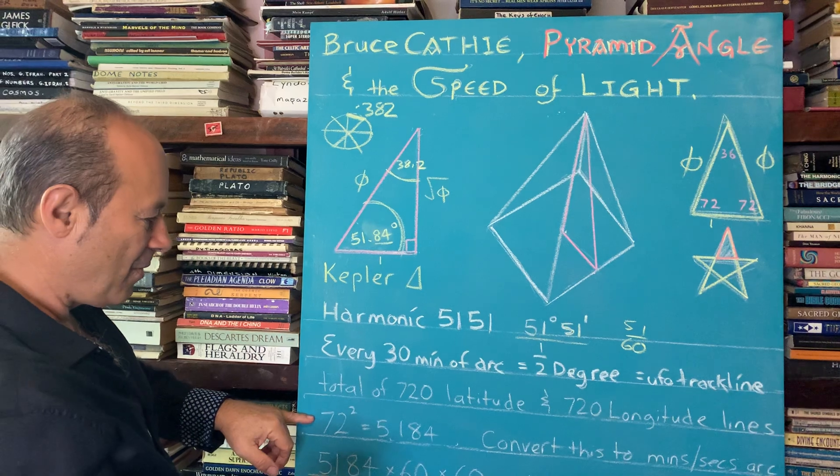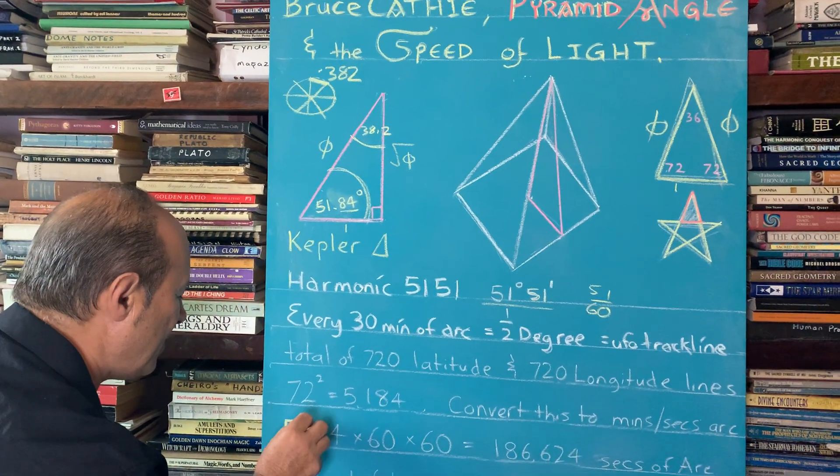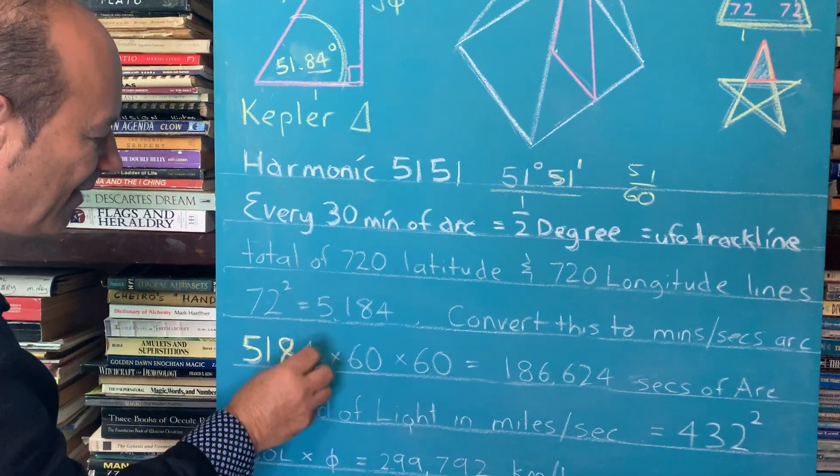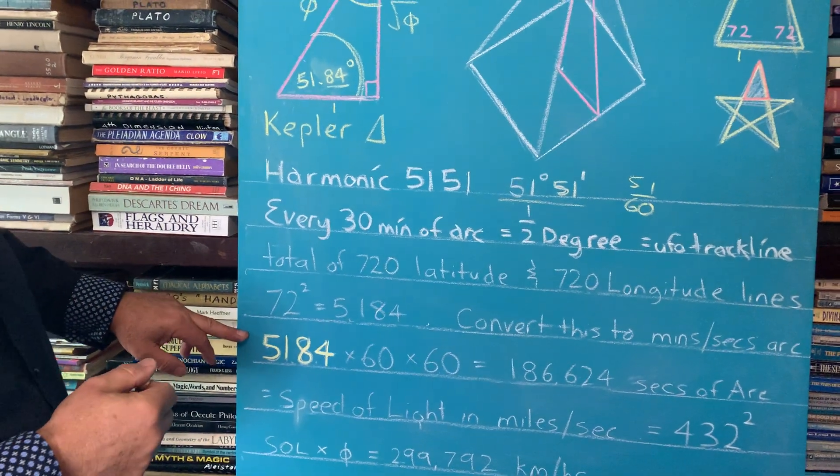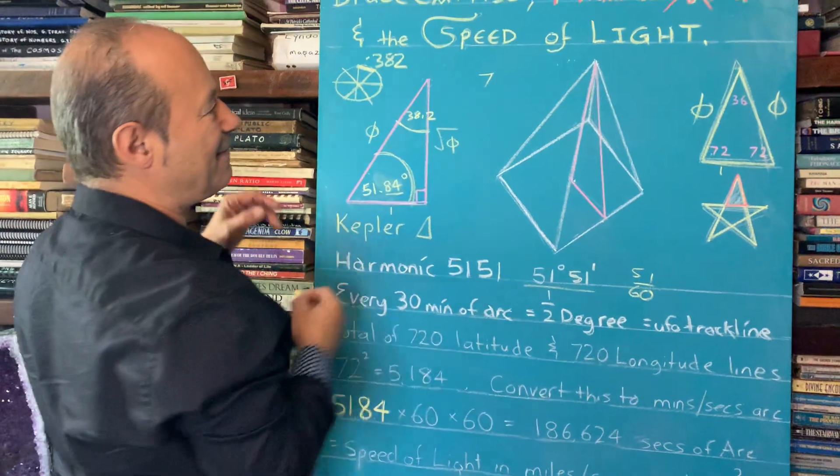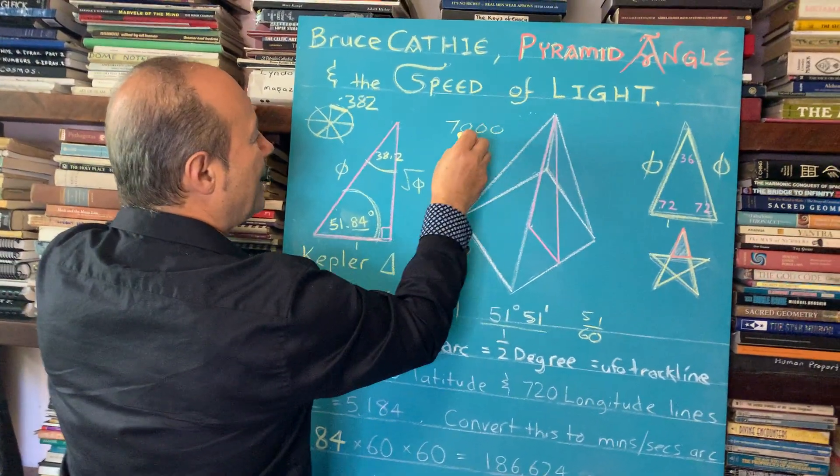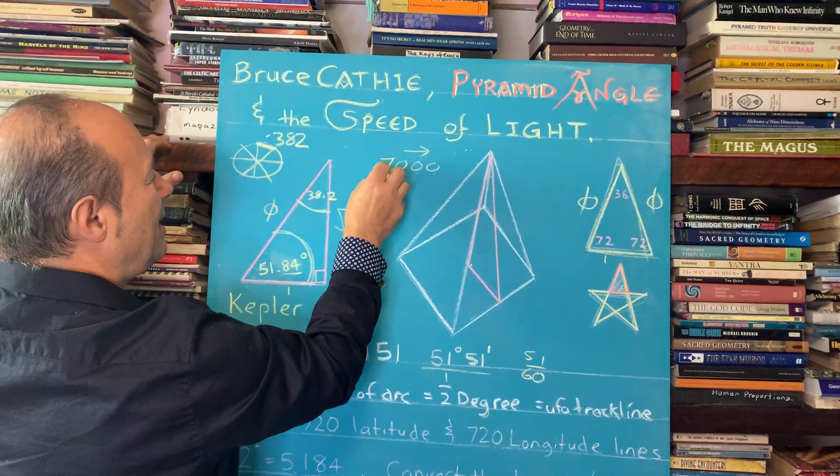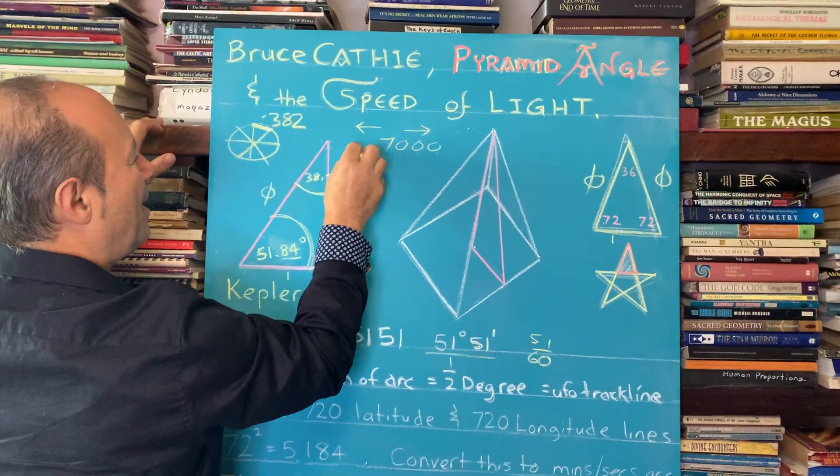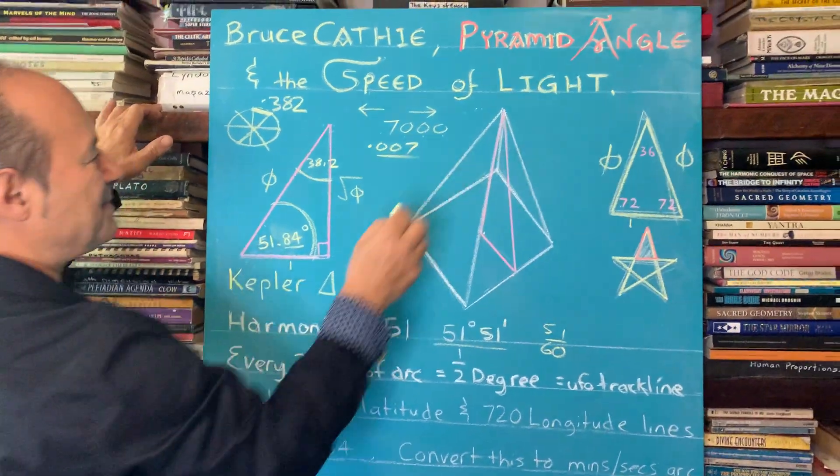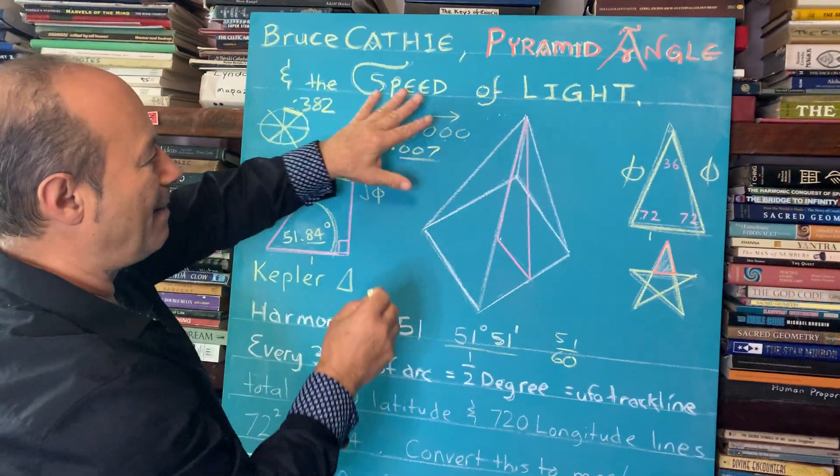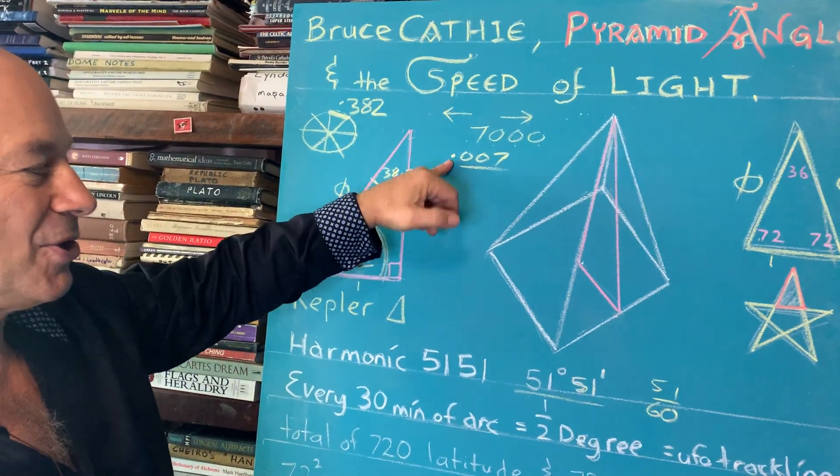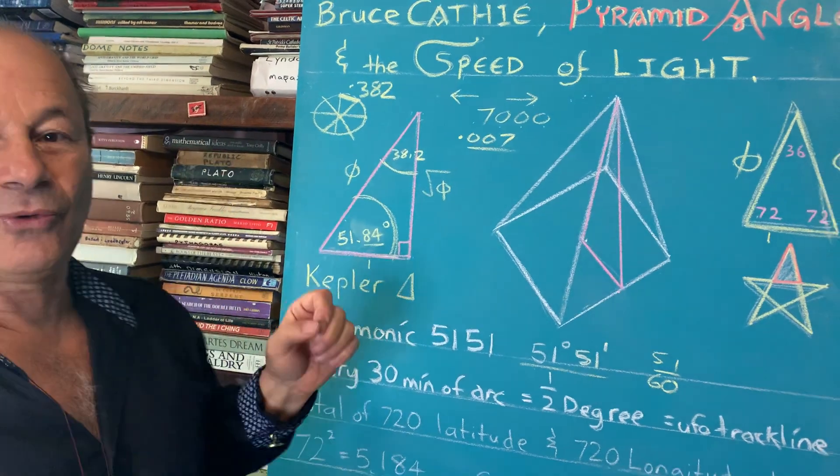In harmonics, we're allowed to take this number 51. If the decimal was here, I can move it once, twice, and I actually get the number 5184. This is called harmonic maths. Harmonic maths means if I take the number seven, I can keep adding zeros to it and make it 70, 700, 7000. This is growing it into the macro. But if I went the other way, it would become 0.007, getting smaller and smaller. In harmonics, which is the key to three-dimensional trigonometry, we're allowed to slide the decimal. This is not used in current maths, but it's the key to all the future sciences.